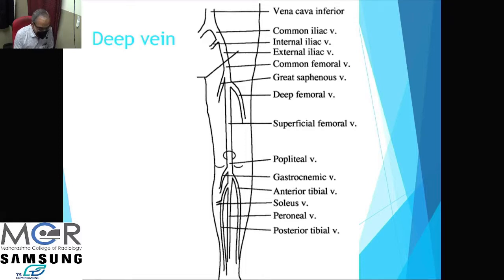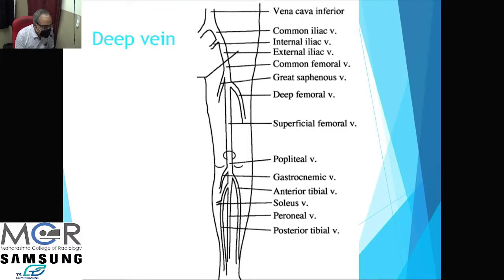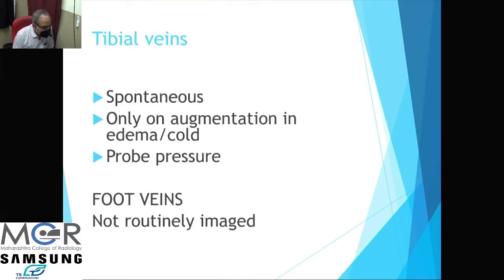The popliteal vein is joined by the short saphenous vein and enters the adductor canal, called the superficial femoral vein, where it is joined by the deep femoral vein and the great saphenous vein. The common femoral vein enters the pelvis as the external iliac vein, joined by the internal iliac to form the common iliac vein, and both common iliac veins join to form the IVC. Ideally, evaluation should start from IVC down to the tibials.